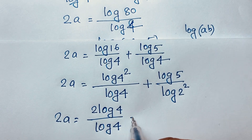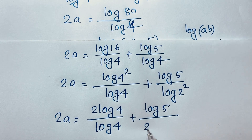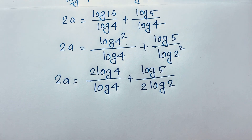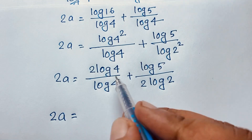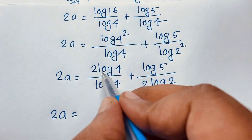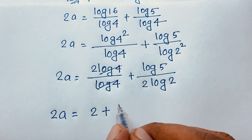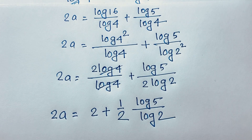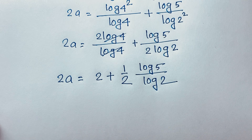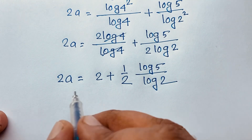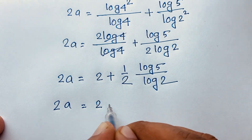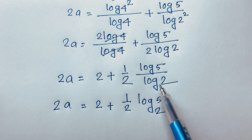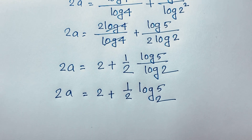Moving on, log 4 squared over log 4 simplifies to 2. The remaining term is log 5 over 2 log 2. So 2a equals 2 plus one half times log 5 over log 2. Since log 5 over log 2 equals log base 2 of 5, we have 2a equals 2 plus one half log base 2 of 5.